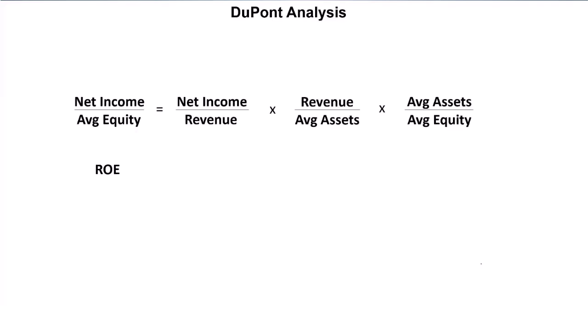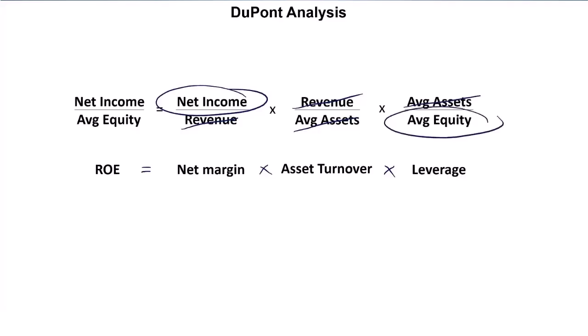Those three ratios should look familiar. Net income over revenue is the net margin — how much profit you make per dollar of revenue. Revenue over average assets is asset turnover — given your asset base, how much revenue do you generate? And finally, leverage: assets over equity measures how much of your asset base is financed by equity as opposed to debt. Multiply those three together and you get back to ROE. It's simple math — revenue in the denominator cancels with revenue in the numerator, and average assets cancel out, leaving you with net income over equity: ROE.